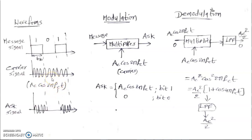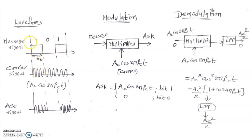The ASK signal is obtained by transmitting the carrier wave as-is when the message signal is 1. This bit duration is 0 to Tb. If no message signal is present (bit is 0), we transmit nothing during that duration. So the ASK signal is generated by simply multiplying the message signal with the carrier: if message is 1, we transmit ac·cos(2πfc·t); if message is 0, we transmit 0.